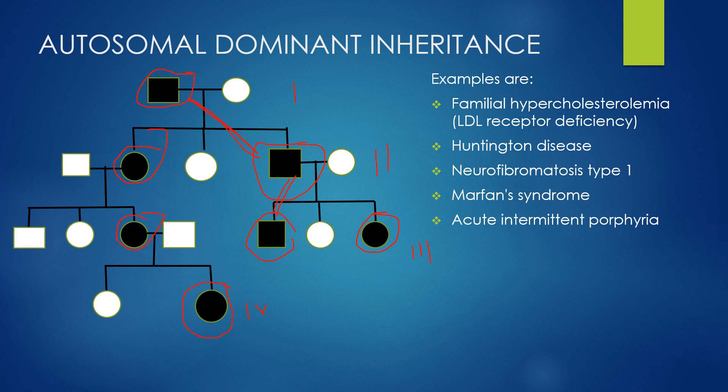Typical examples of autosomal dominant diseases are familial hypercholesterolemia, Huntington disease, neurofibromatosis type 1, Marfan syndrome, and acute intermittent porphyria.